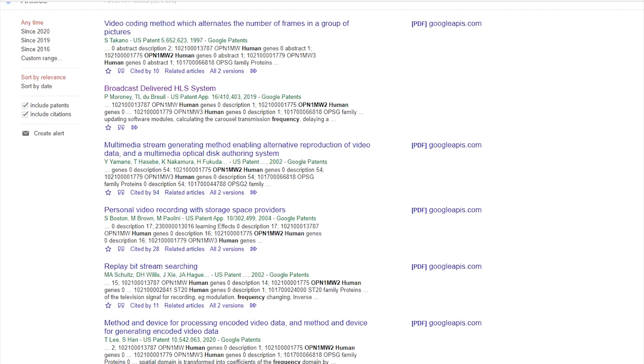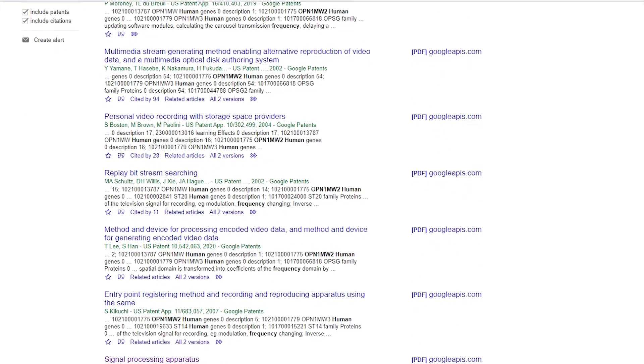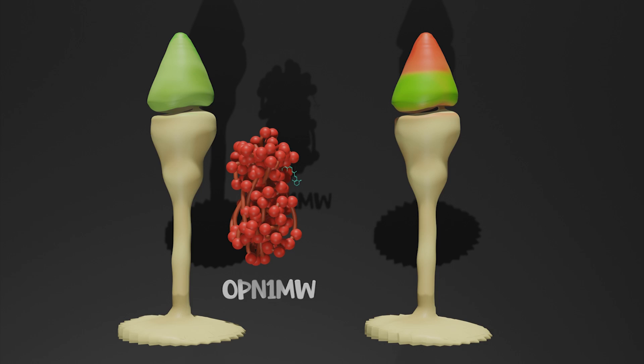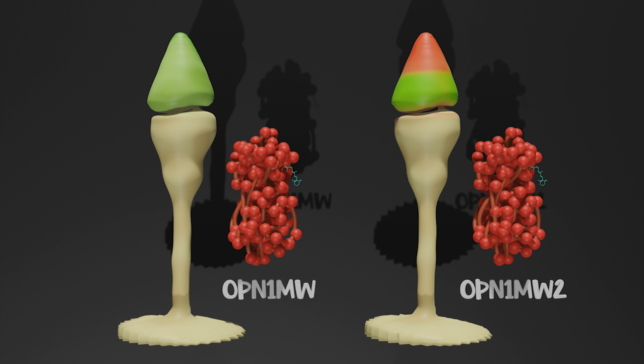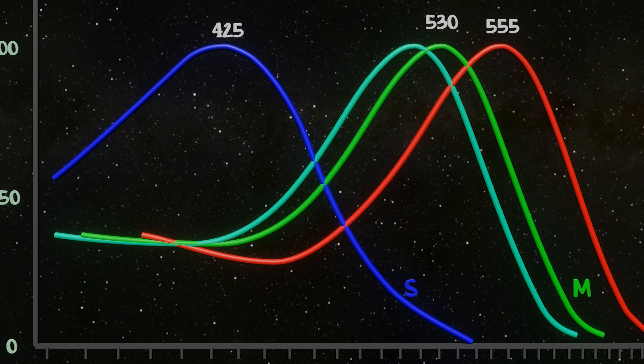Now, I couldn't find any papers discussing the absorption spectrum of this mutation, but the fourth cone is a mutation of the green cone, so its spectrum is probably nearby, either slightly shifted to the red or blue direction.